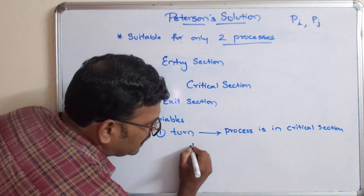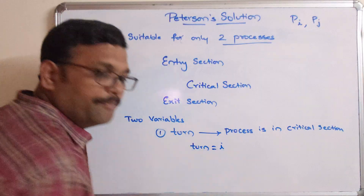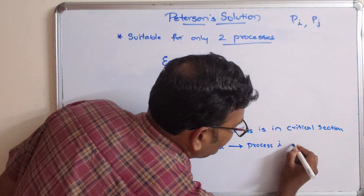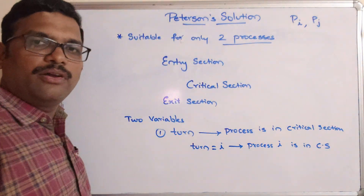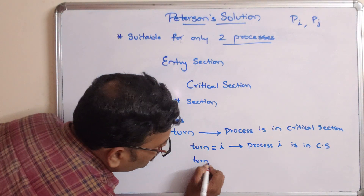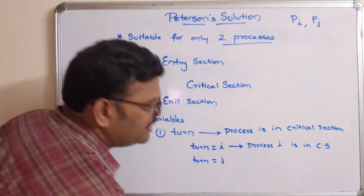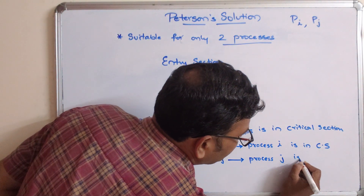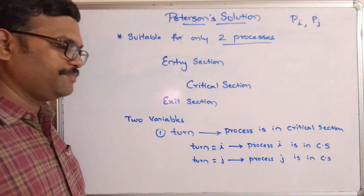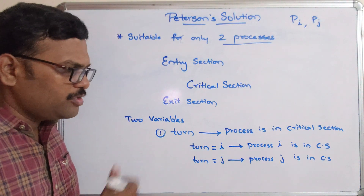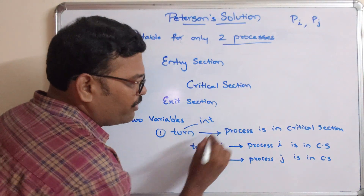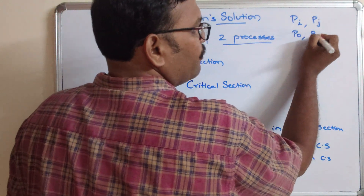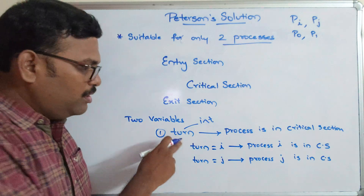Let the two processes be PI and PJ. So 'turn = I' means process I is in the critical section. Similarly, 'turn = J' implies process J is in the critical section. This is the first variable. You can also use it as an integer representing 0 and 1, where 0 means the first process and 1 means the second process.